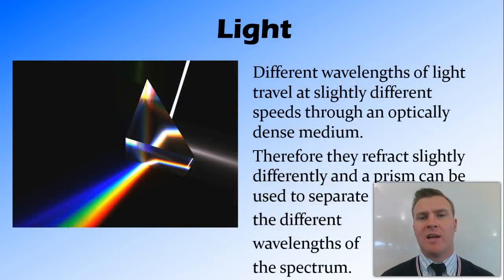These different wavelengths of electromagnetic radiation travel at slightly, very slightly different speeds through mediums of different optical density. So when you get something like a glass prism, what you're able to do is harness this fact that they travel slightly differently and split the white light into the spectrum so that you can see the different colours of light or the rainbow.